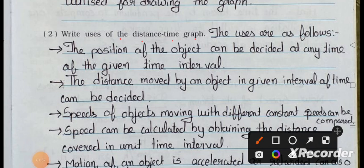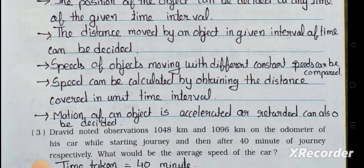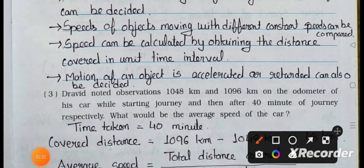Question number two: Write the uses of the distance-time graph. Answer — The uses are as follows: the position of the object can be decided at any time within the given time interval; the distance moved by an object in a given interval of time can be decided; speeds of objects moving with different constant speeds can be compared; speed can be calculated by obtaining the distance covered in unit time intervals; and whether motion of an object is accelerated or retarded can also be decided.